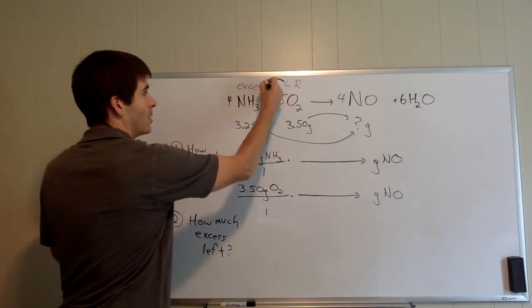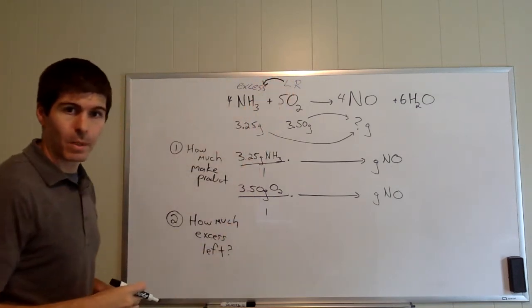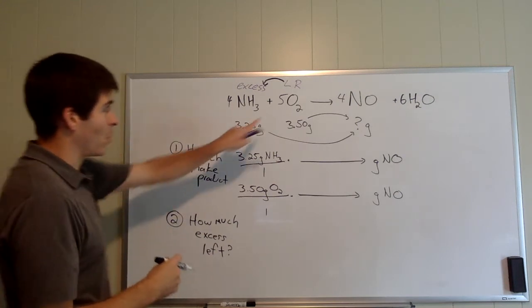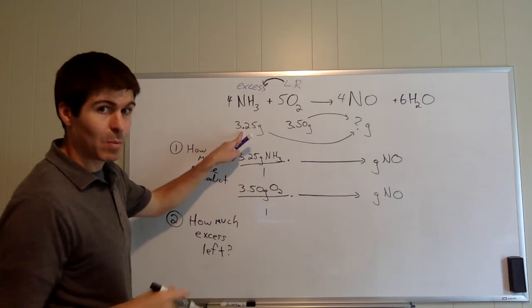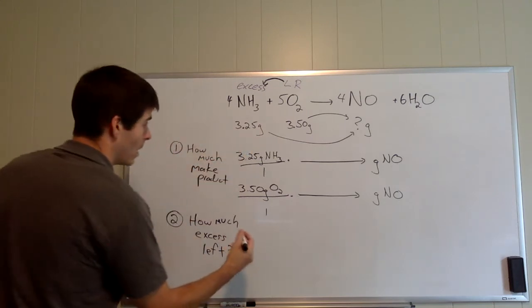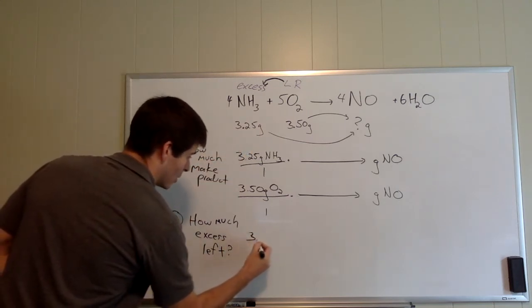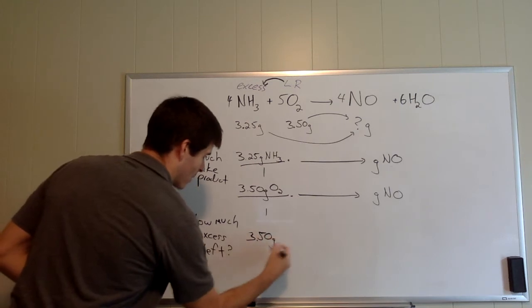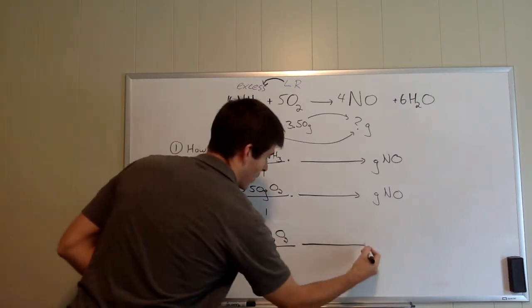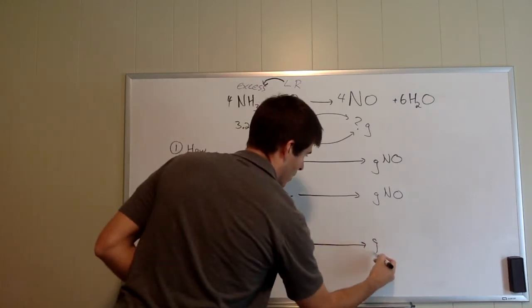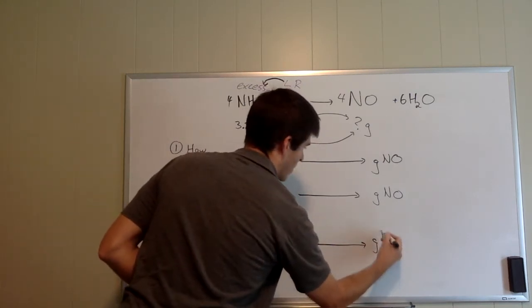Okay. So what we're saying is we know all of this 3.5 is going to go away. How much of this 3.25 will go with it? So we start out with the oxygen: 3.5 grams of oxygen. And we're going to convert that over to grams of ammonia.